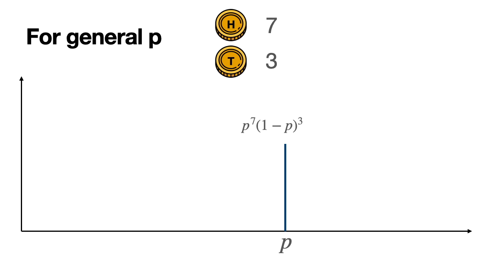Well, it's p to the seven times one minus p to the three. The reason is that this p is the probability of landing heads, and we need seven of those. And this one minus p, the probability of landing tails, because it's one minus the probability of landing heads. And that we need three times for the three tails. And so it's p to the seven times one minus p to the three. Now, if you have experience with combinatorics, you may be wondering, wait a minute, why did you take them in order, instead of in any possible order?